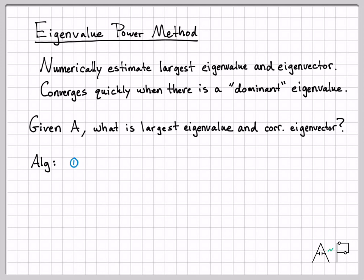The first step is easy — we just pick a guess. We don't know what the largest eigenvector is, so we're going to pick a value, but we're going to make sure that the largest entry of that vector has a magnitude of one. So when we make our initial guess, there is some initial restriction, but in general we can pick just about anything we want.